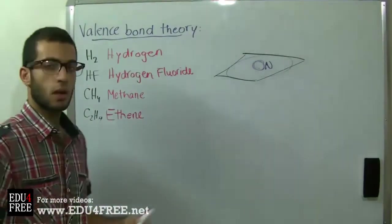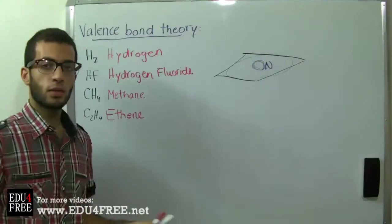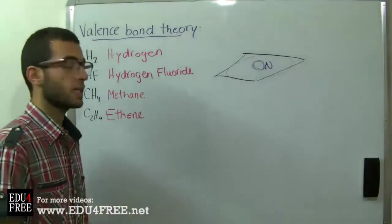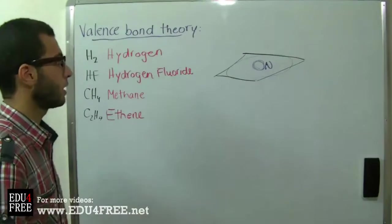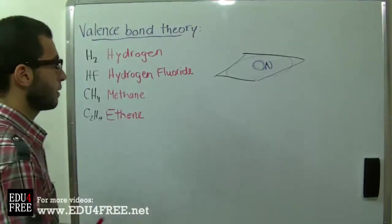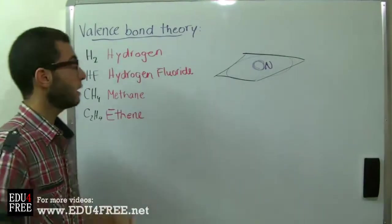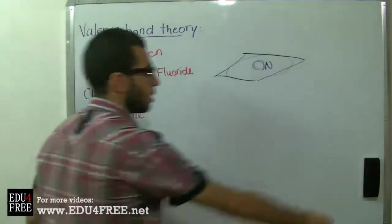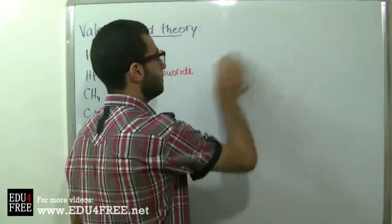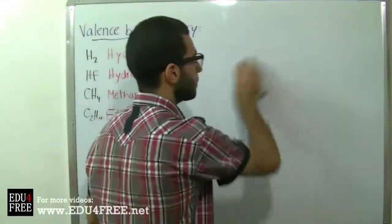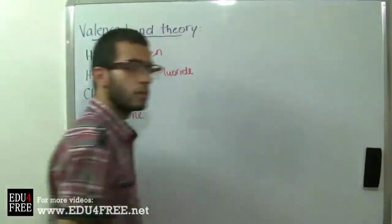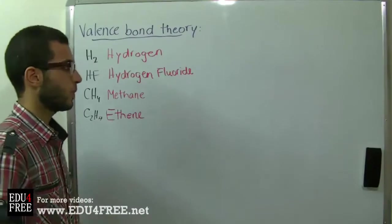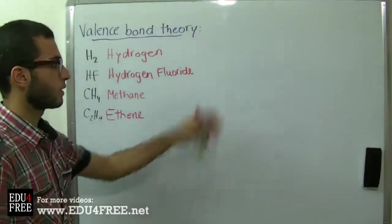When people discovered that the electron is not just a negatively charged particle but also has wave properties, they changed the theory of covalent bonding into the valence bond theory. The valence bond theory deals with covalent bonding acting in a three-dimensional space, not a planar space.